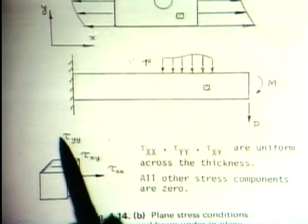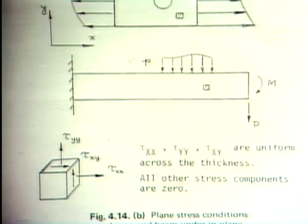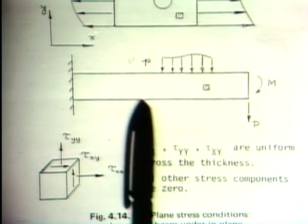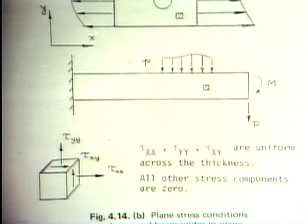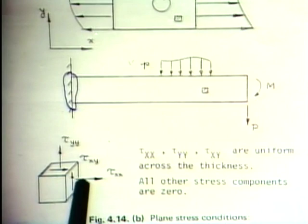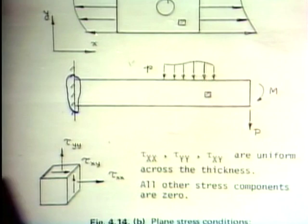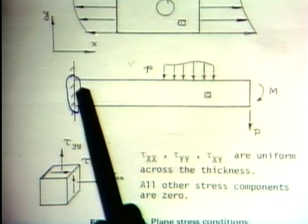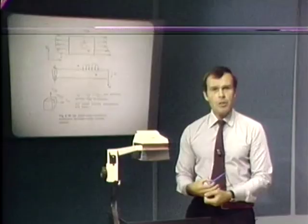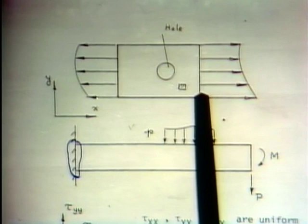The cantilever can be subjected to surface loading, a bending moment, or tip loading. The only stress components assumed to act in this structure are these three. In the actual physical situation, near the support there would be a more complicated stress state, but if we are only interested in displacements or stresses away from the support, it is accurate enough to assume plane stress. Another plane stress situation occurs for a thin sheet with a hole, where only the in-plane stress components are present.